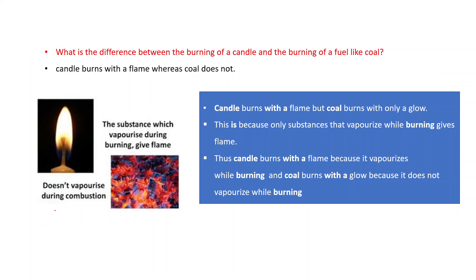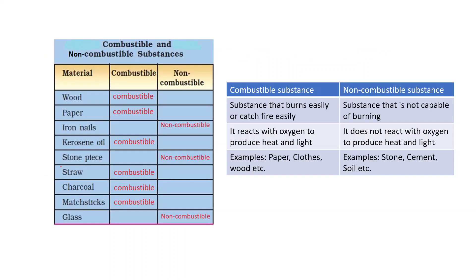What is the difference between the burning of a candle and burning of a fuel like coal? A candle burns with a flame whereas coal does not. Only substances that vaporize while burning produce a flame. Thus a candle burns with a flame because it vaporizes while burning, and coal burns with a glow because it does not vaporize while burning.